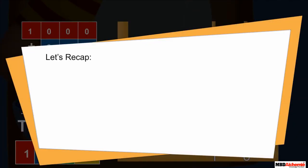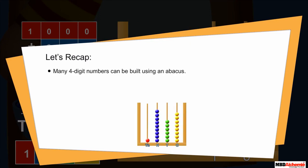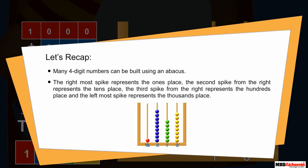Let's recap. Many four-digit numbers can be built using an abacus. The rightmost spike represents the ones place, the second spike from the right represents the tens place, the third spike from the right represents the hundreds place, and the leftmost spike represents the thousands place.